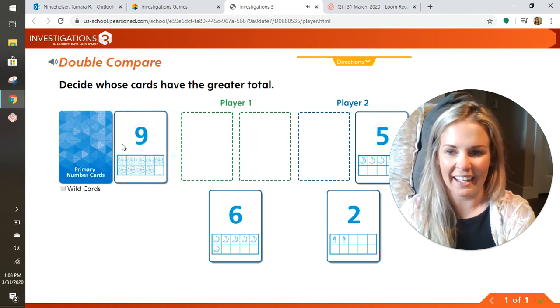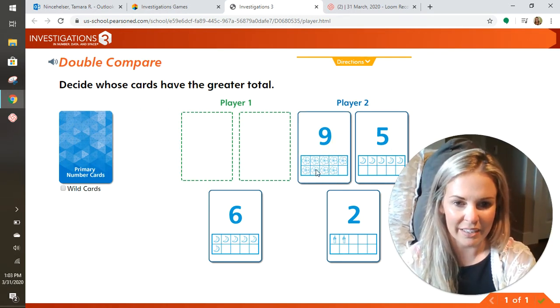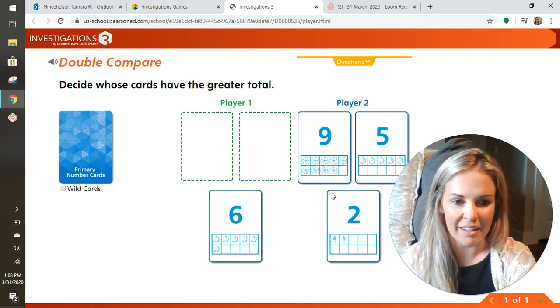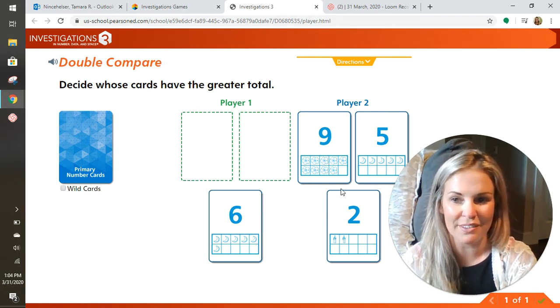Five and nine. Ooh, what's that? Nine, one, two, three, four, five, six, seven, eight, nine, 10, 11, 12, 13, 14. So you've got to get more than 14 to win.